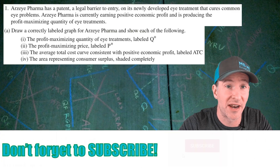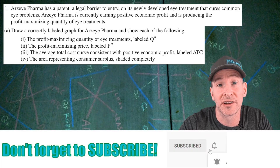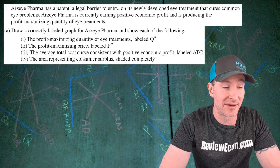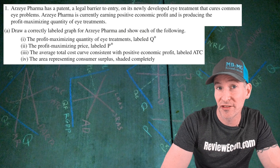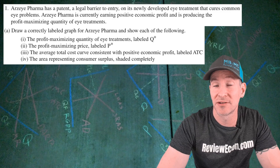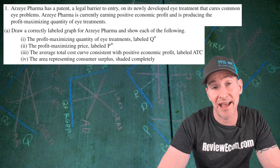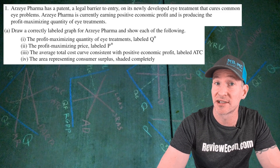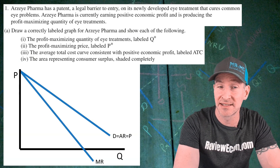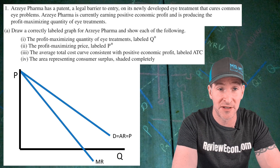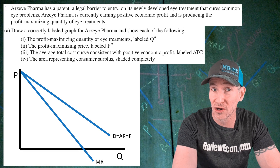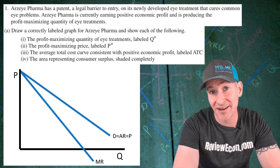This question starts off with a monopoly. We have Arzai Pharma and they have a patent on a treatment that cures eye problems. They're currently profit maximizing and earning an economic profit. We need to draw the graph with quantity on the x-axis and price on the y-axis. We have a downward sloping demand curve, also labeled average revenue and price, and a marginal revenue curve below the demand curve. If you have that, you get your first point.